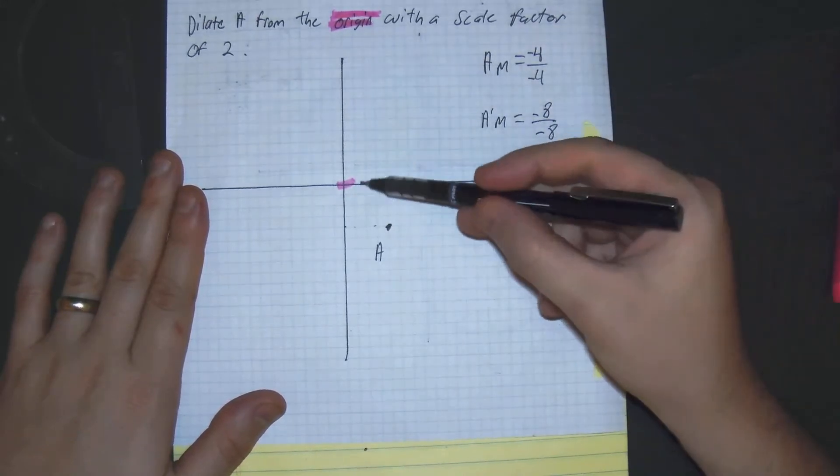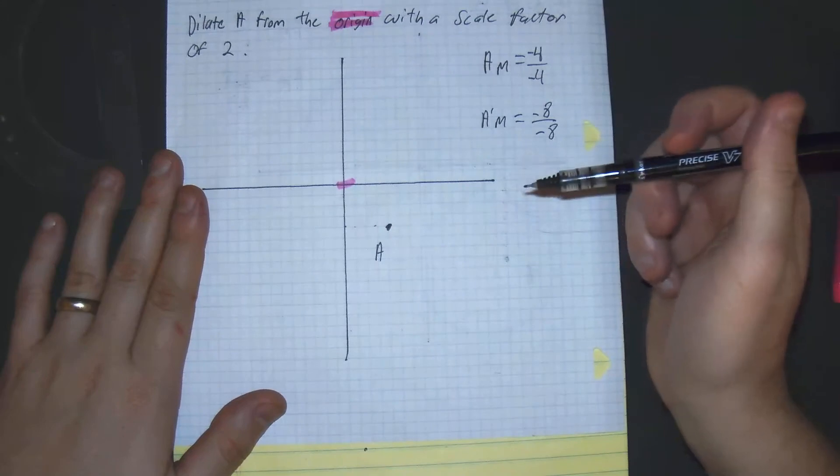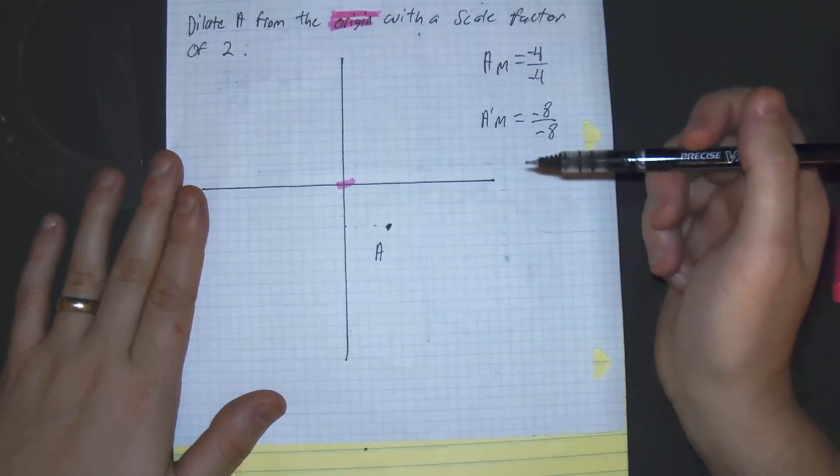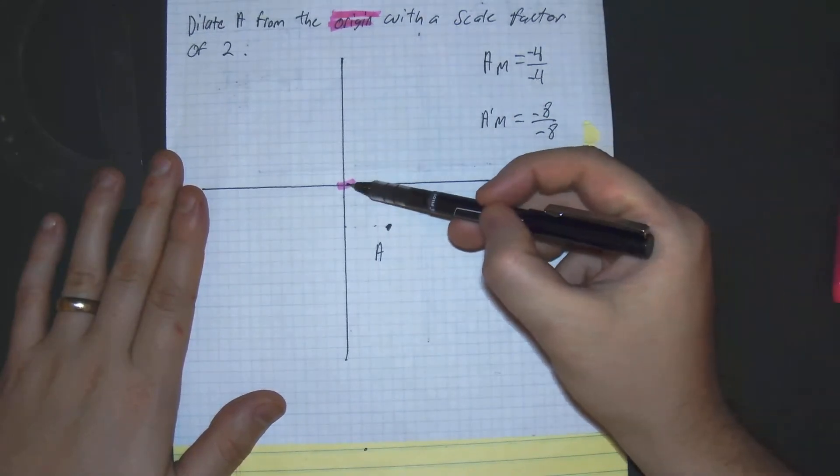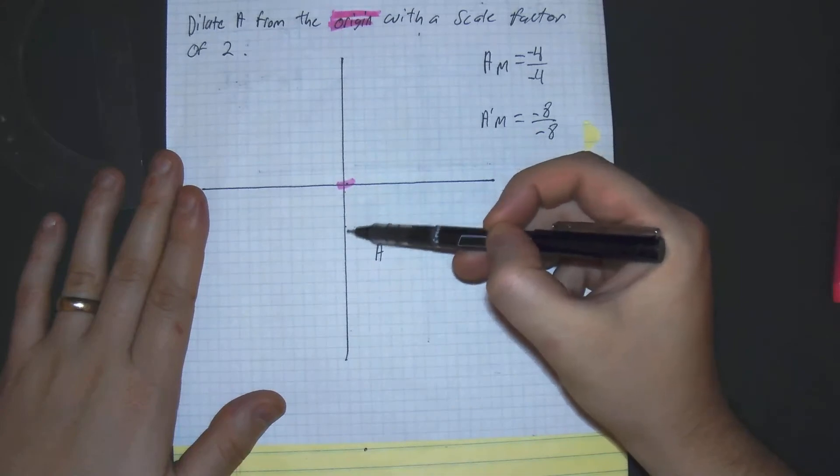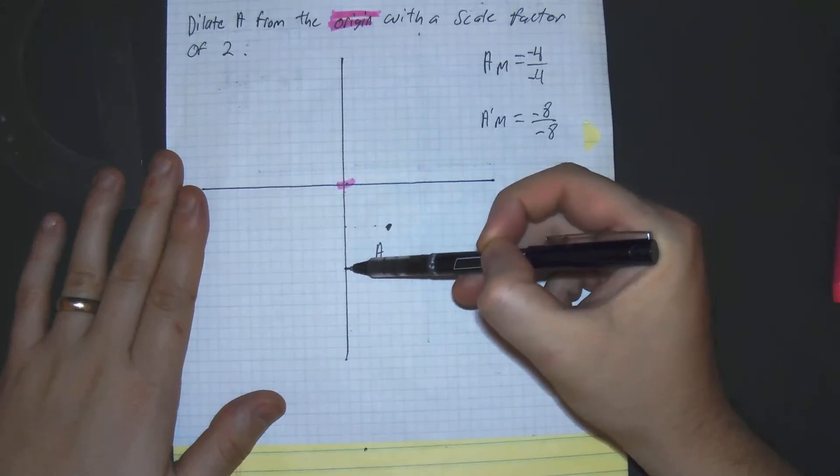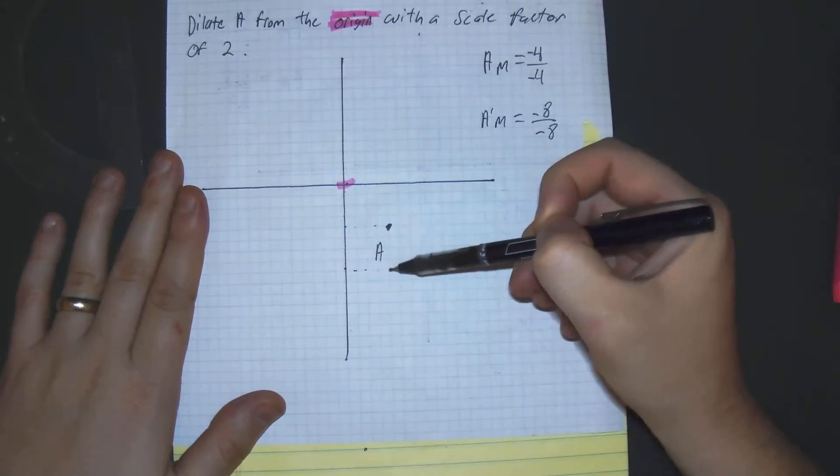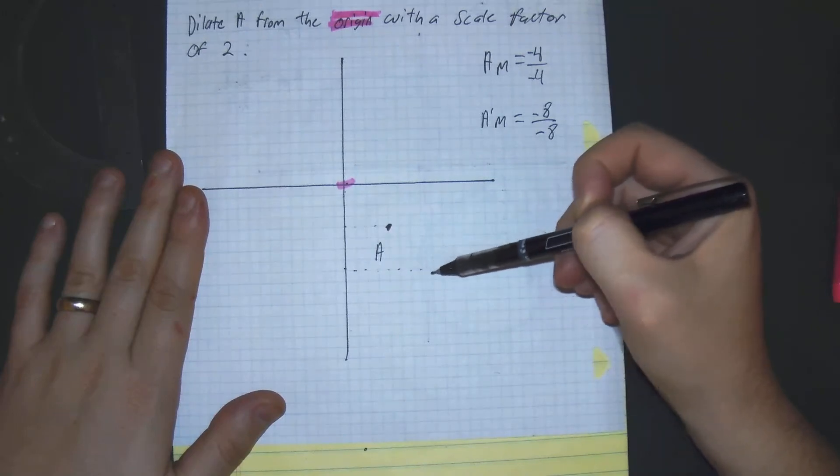So we start from the point of dilation, the origin, and we go down 8 and then right 8. 1, 2, 3, 4, 5, 6, 7, 8, then 1, 2, 3, 4, 5, 6, 7, 8.